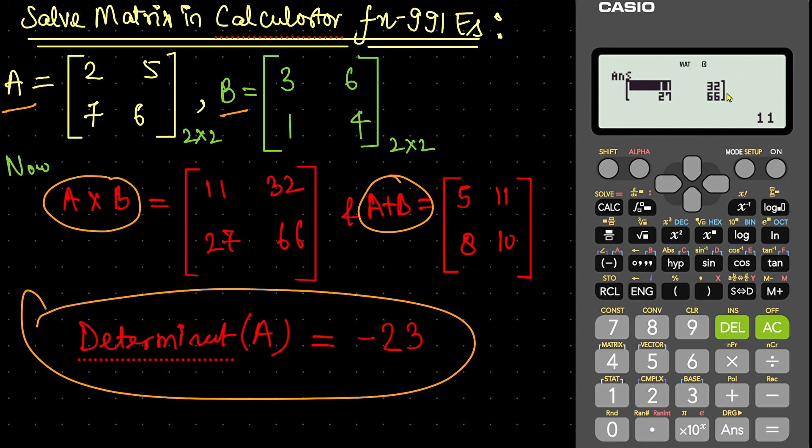11, 32, 27 and 66. That is what we have manually calculated. The same thing can happen. Now, press AC.